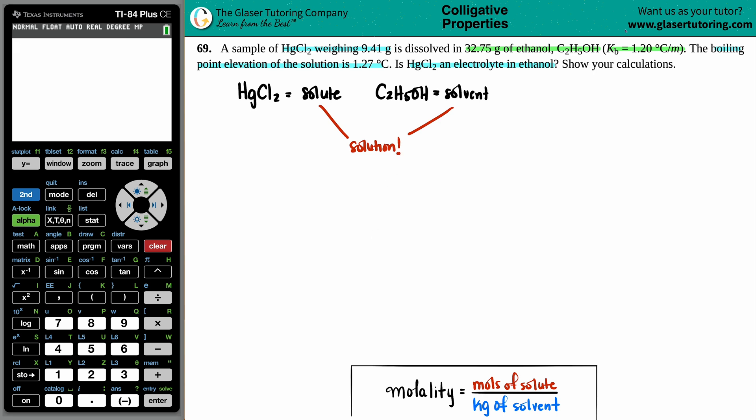So, solution chemistry, we're talking about boiling points. They gave us a boiling point elevation. They gave us a Kb value. What formula comes to mind? Well, for me, it's this one right here. Did you think of the same formula? Delta Tb equals Kb times molality times I.